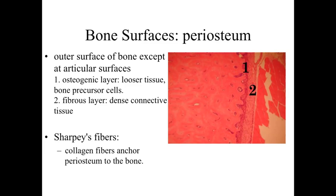The first layer is going to be the osteogenic layer — os for bone, genic for birth — so this is the region capable of producing bone cells if necessary. We'll see a finer, looser connective tissue in that osteogenic layer right on the external surface of the bone. Here we have bone precursor cells — they may be osteogenic stem cells sitting there waiting for a signal. If they receive that signal, they differentiate and become osteoblasts, producing bone and eventually becoming bone cells. They're there essentially as a reserve.